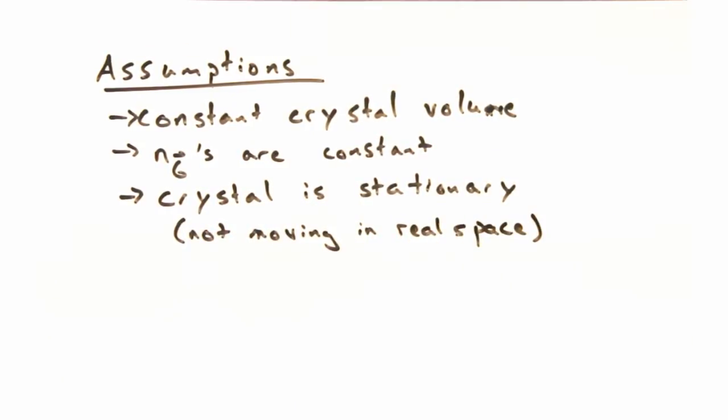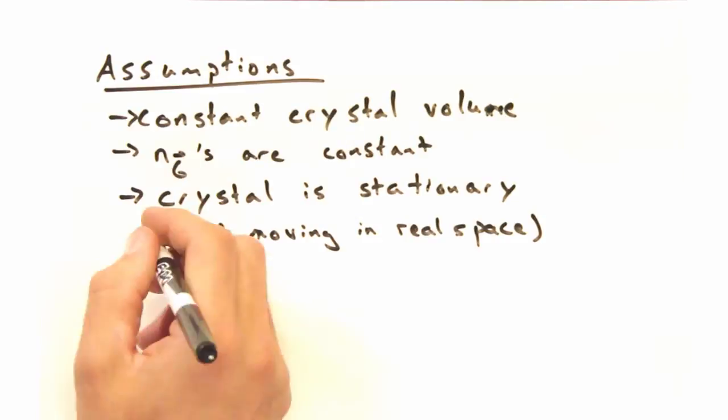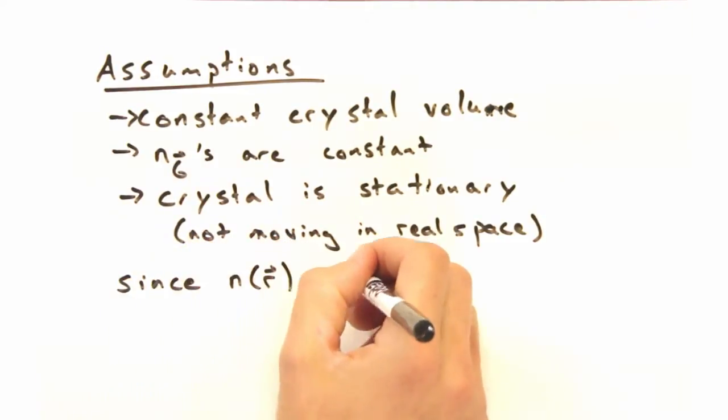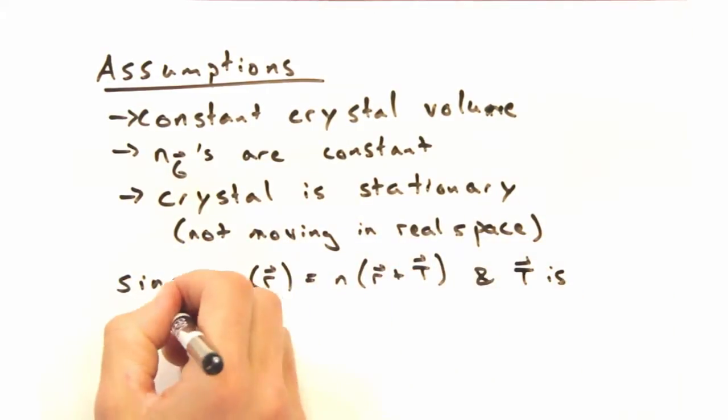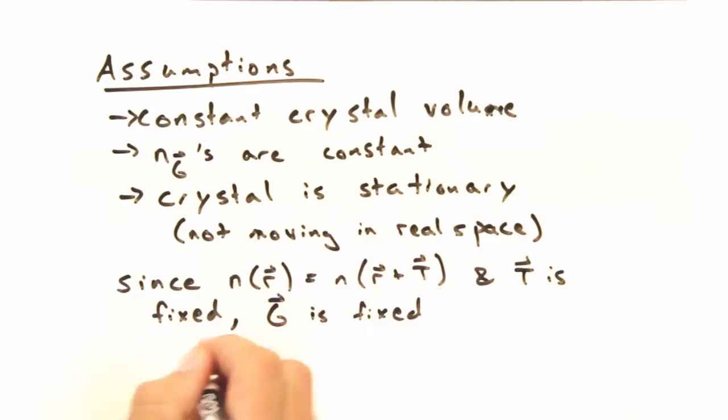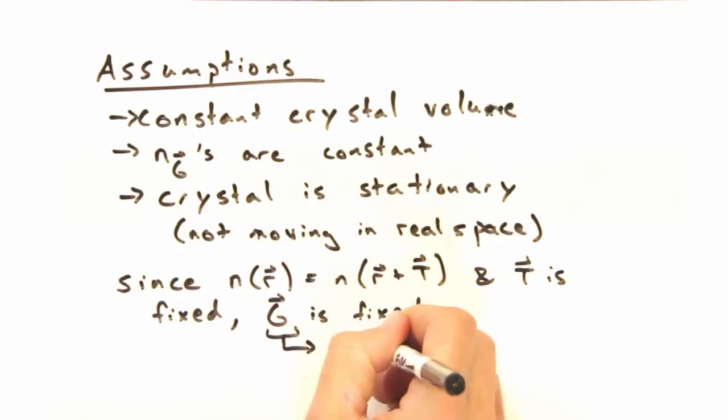Okay, so what does that mean for our amplitude equation? I'm getting to that. Do you remember how we defined our scattering density as being periodic with T, and used that to define our reciprocal lattice G? Yeah. Okay, so the real space lattice T is invariant in time, since the crystal's just sitting there. So G is constant as well?